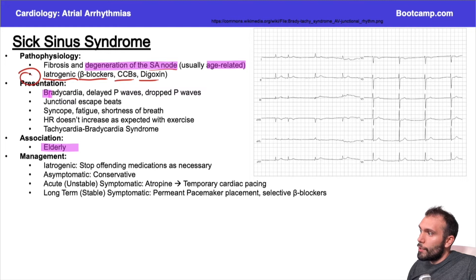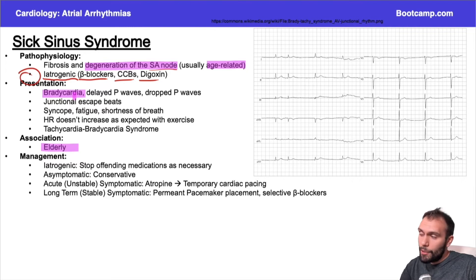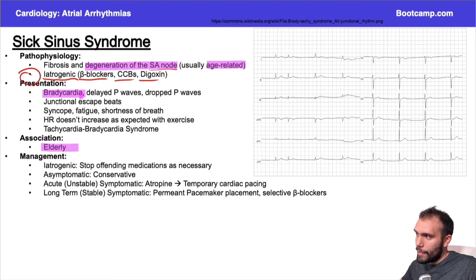Now the presentation here, very classically, it's going to be a patient that has bradycardia. Remember, classic presentations for atrial flutter and AFib are going to be tachycardia. Here, this is going to be more of a bradycardia in general.